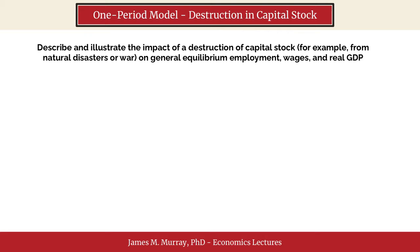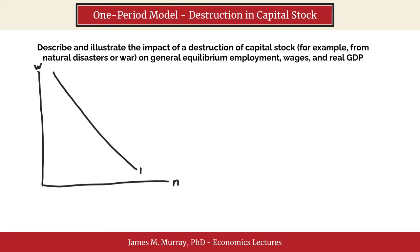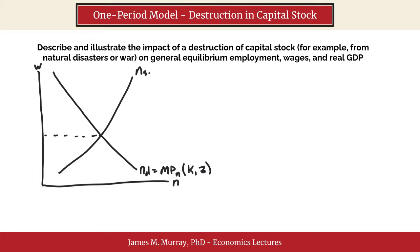I will start by drawing the labor market equilibrium. In the market for labor, we have the quantity of labor, or employment, on the horizontal axis, and we have the wage on the vertical axis. The labor demand curve is the marginal product of labor. The marginal product of labor depends positively on the level of capital stock and the state of technology, Z. Let's put an upward sloping labor supply curve, which depends on the consumer's decisions for consumption and leisure. Here's our original equilibrium, N1, W1.